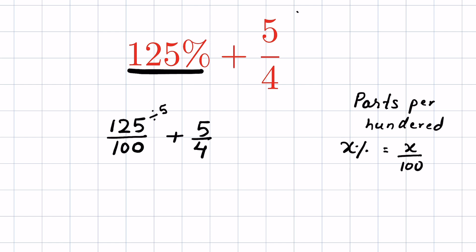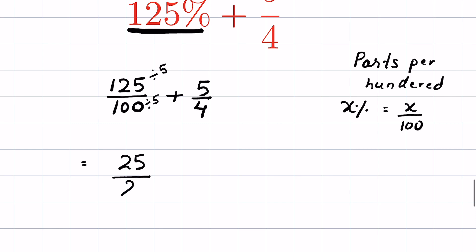If we divide 125 by 5 and 100 by 5, then 125 divided by 5 is 25 upon 100 divided by 5 is 20.